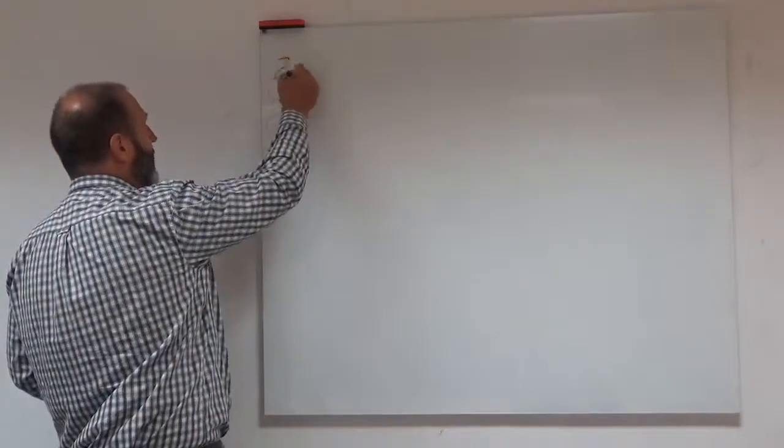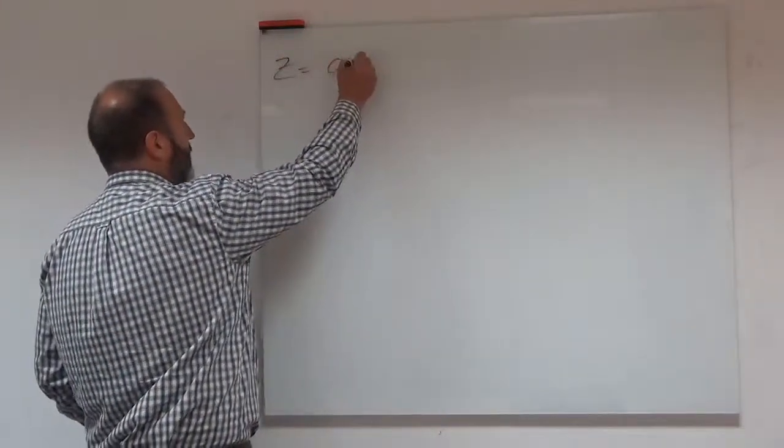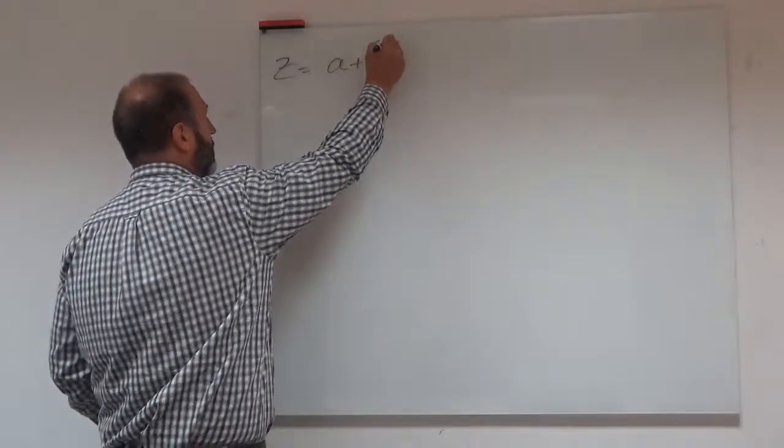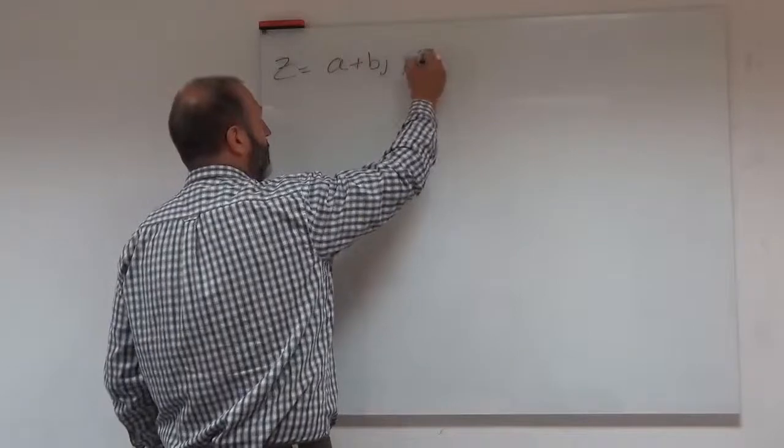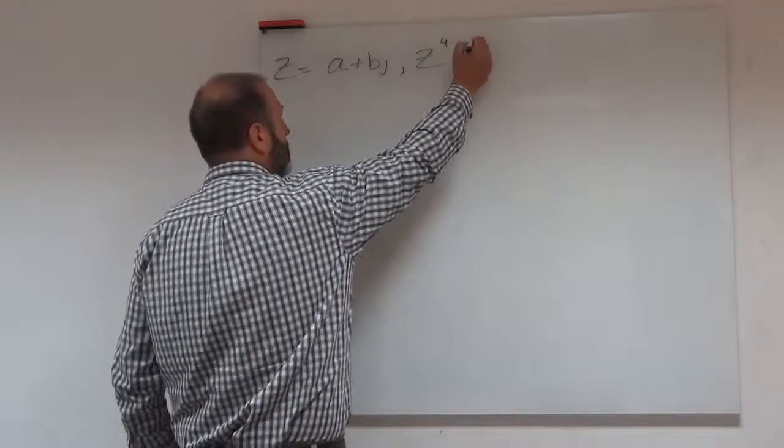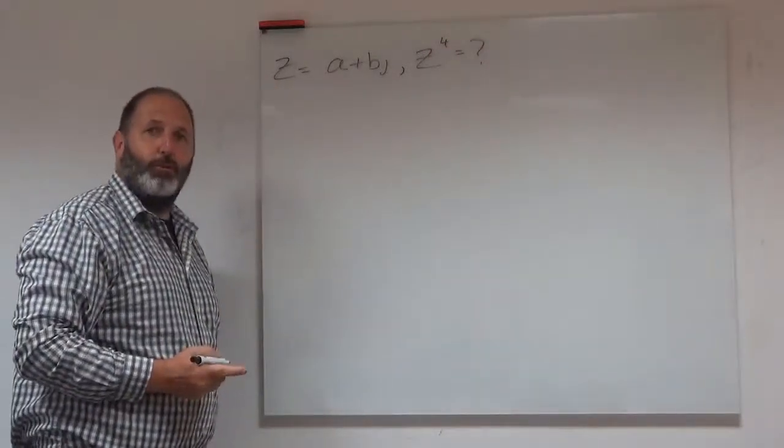So what I mean by that is if we had z equals a plus bj and I wanted to know what z to the 4 was, how would I do that?